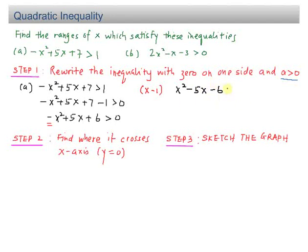Very important: if you multiply by negative 1, you must change the inequality sign — so more than becomes less than 0. Step 1 is now complete: we have 0 on one side and the coefficient of x squared is positive 1.